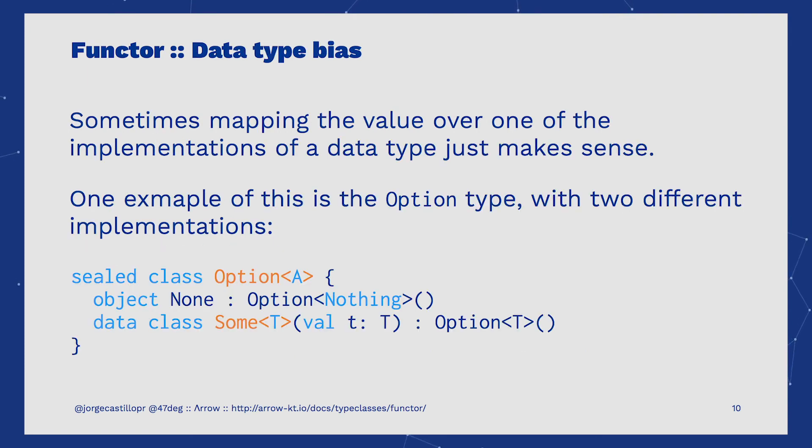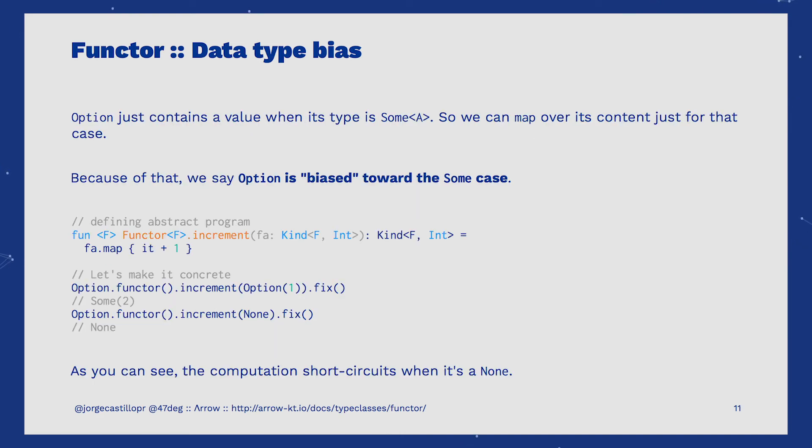There are many cases where mapping over some of the implementations of a given data type do not make much sense. One good example of this would be the Option data type, which is defined as a sealed class with a couple of implementations, None and Some. Given that Option just contains a value when it's a Some, that's the only case we would need to be able to map over. That's why we say that Option is biased toward the Some case.